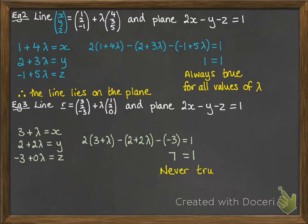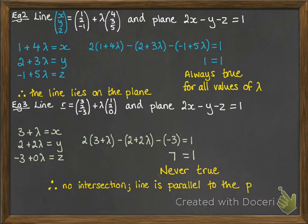Now, of course, that can never be true for any values of lambda, so there is no solution to that equation. There's no intersection. That means that the line is parallel to the plane.